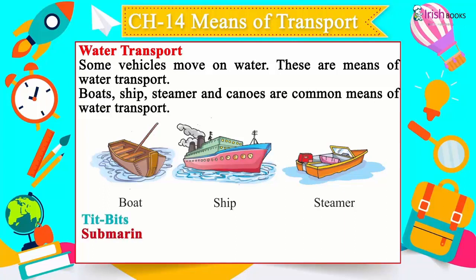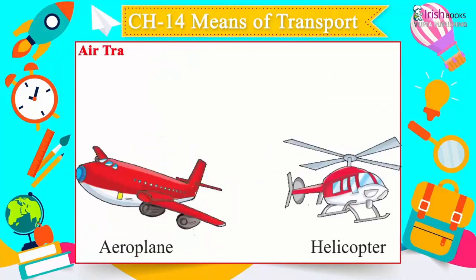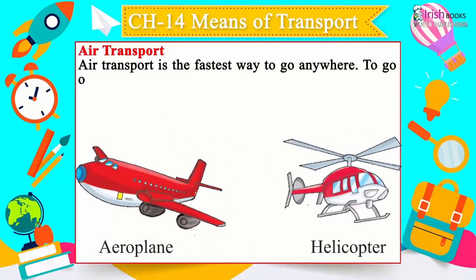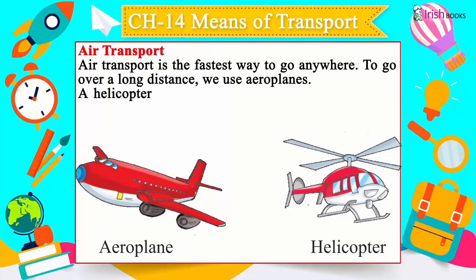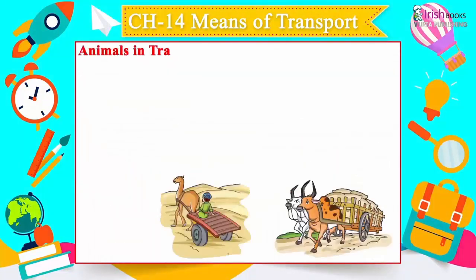Tidbit: A submarine is a vessel that travels underwater, but it is more of a defense vessel. Air transport is the fastest way to go anywhere. To go over a long distance, we use aeroplanes. A helicopter is used to travel short distances and can carry only a few people.